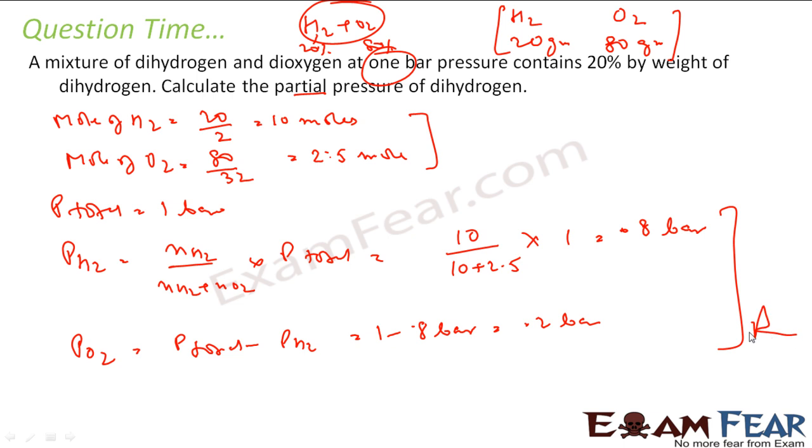Easy only. See, for finding the partial pressure, you will find the moles. So what we need to do is, since it was given 20% hydrogen and 80% oxygen, we assume that total weight is 100 gram. And with that, we can find the assumed moles of hydrogen and oxygen. Once we have assumed moles of hydrogen and oxygen and we have total pressure, we can easily find the partial pressure.